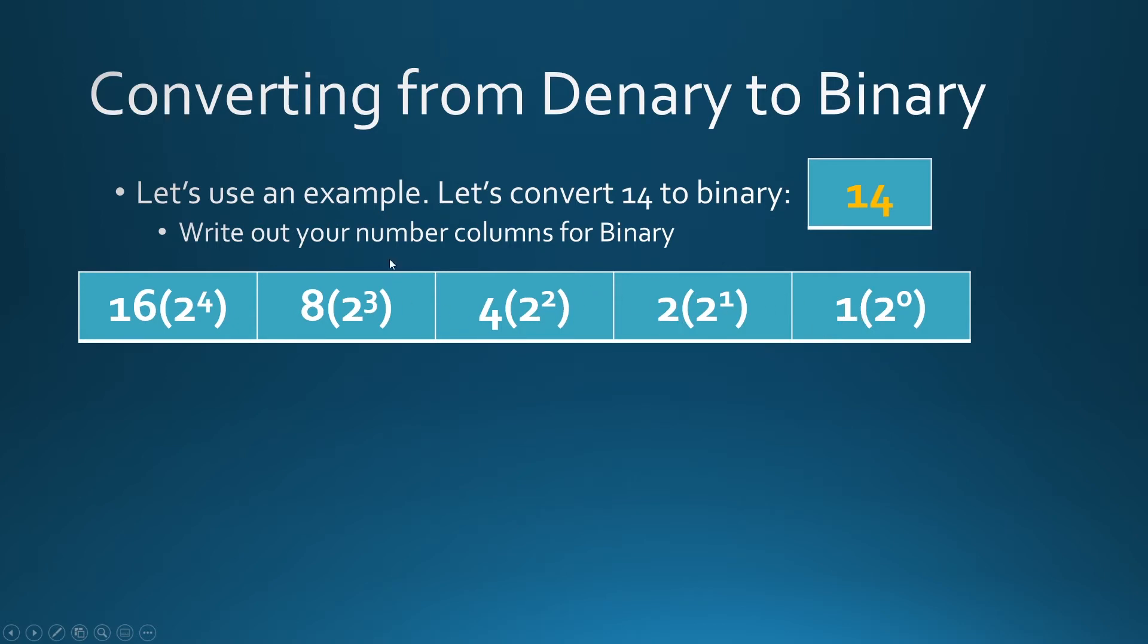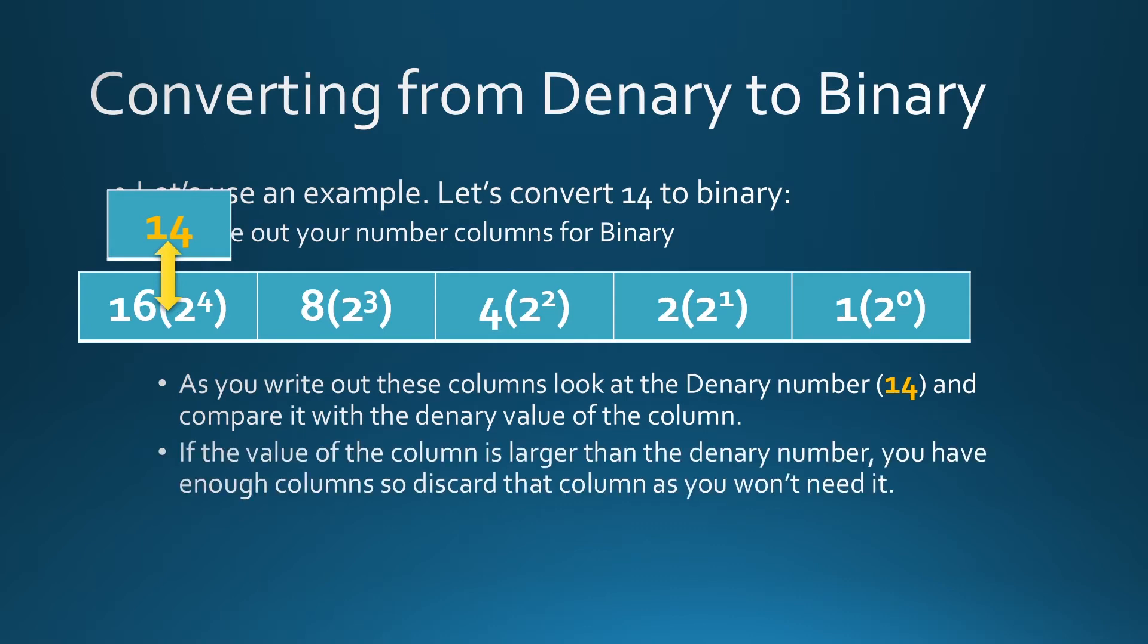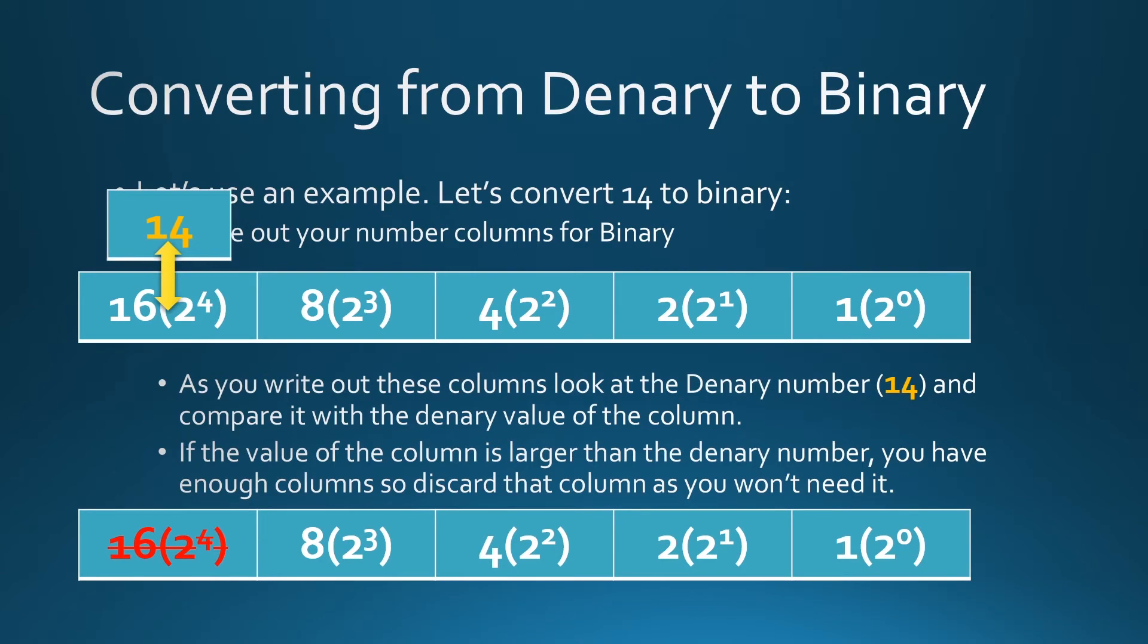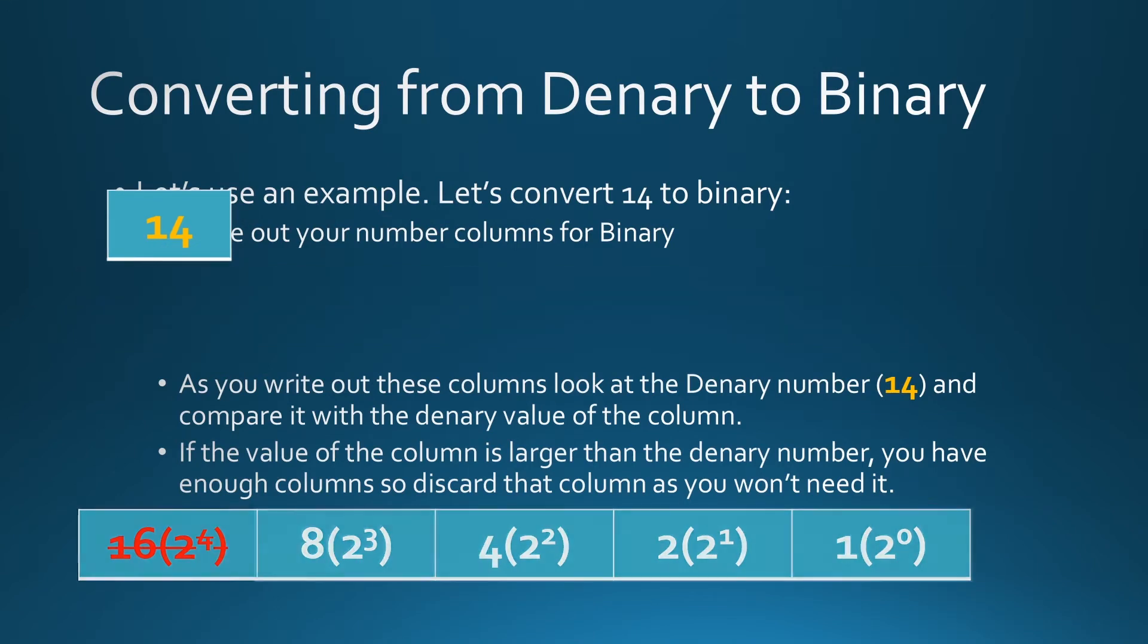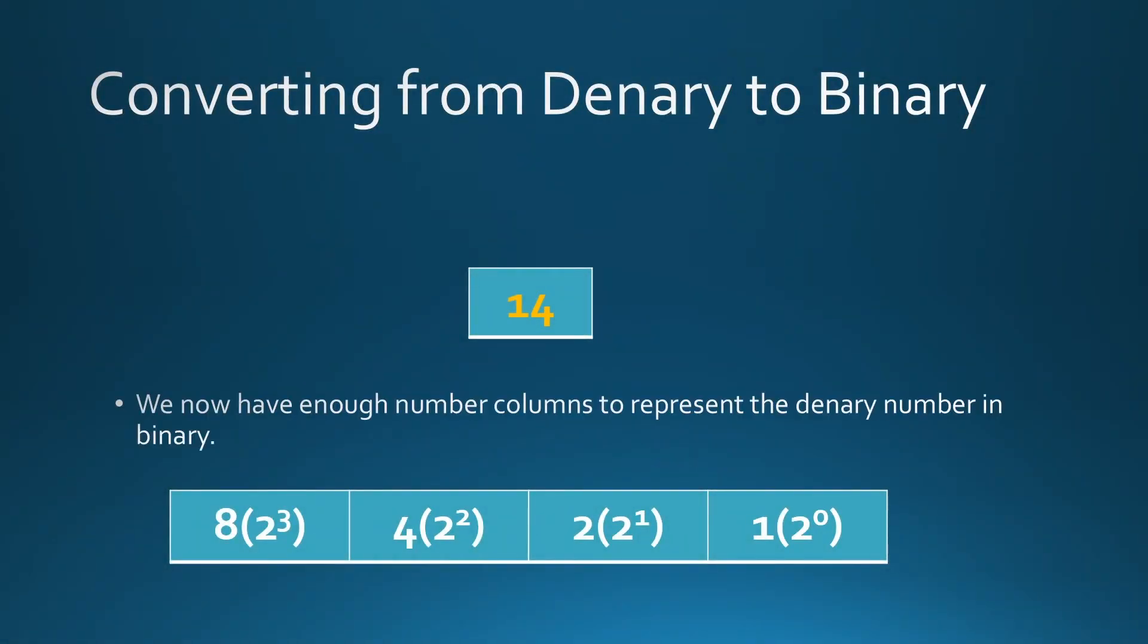2s, and then 4s, and then 8s, and then 16s. Now remember what I said about if you're trying to save yourself some space. Well, compare your number with the left-hand most column. Is it bigger? So if that column is bigger than the number that you actually need, well you know what, you're not actually going to need it, so just get rid of it. And that will give you the columns that you want.